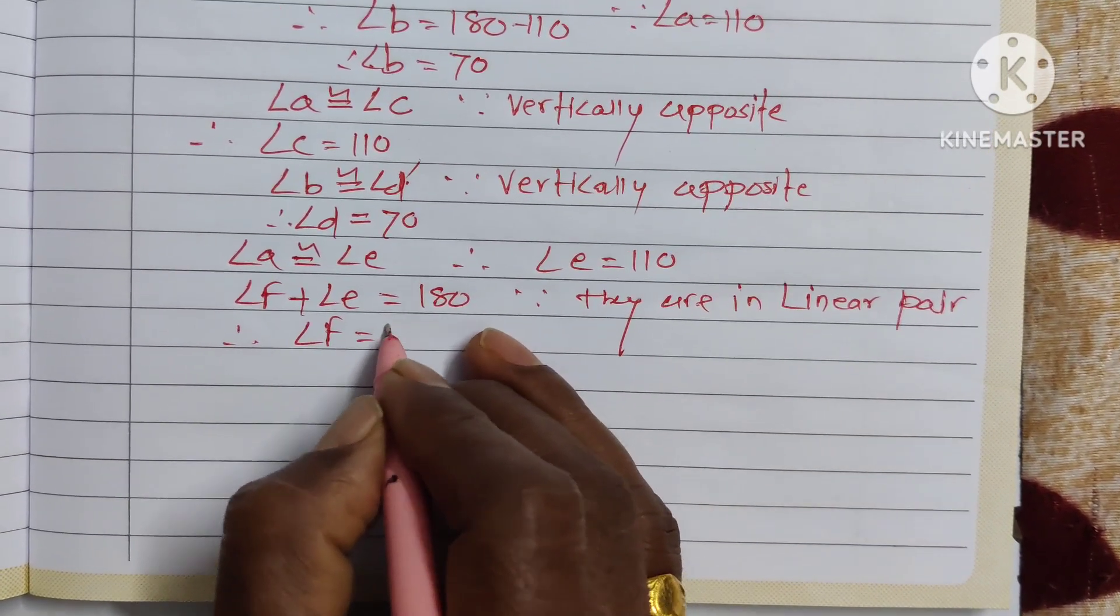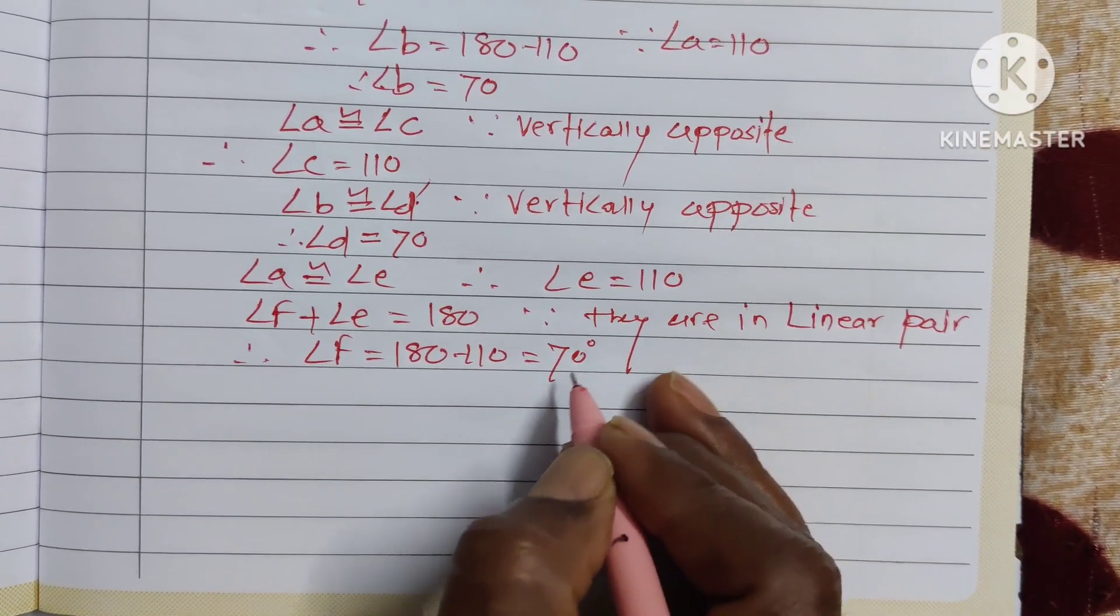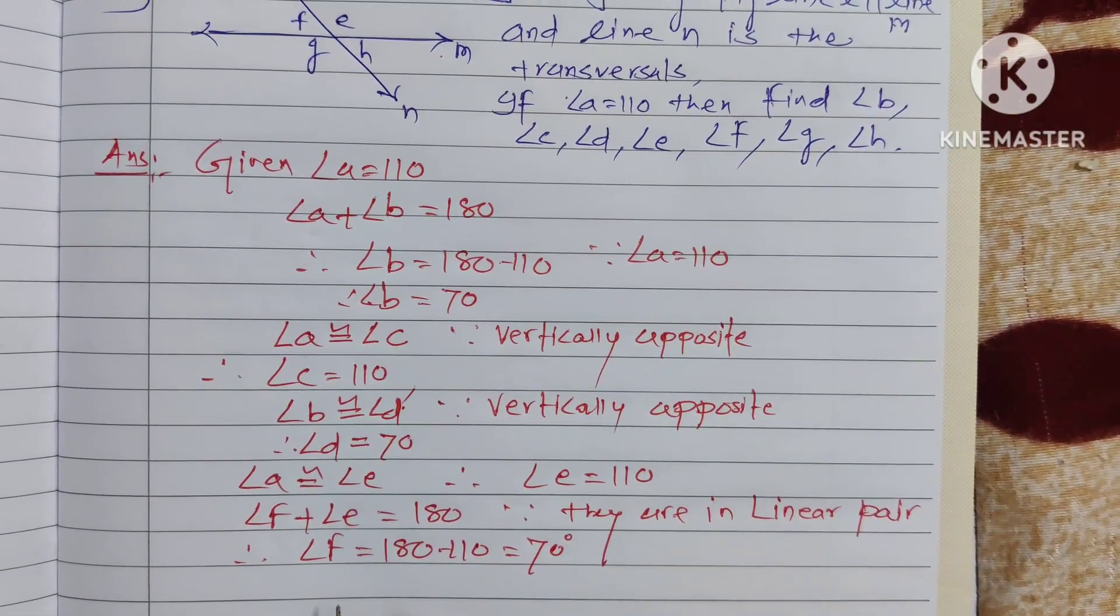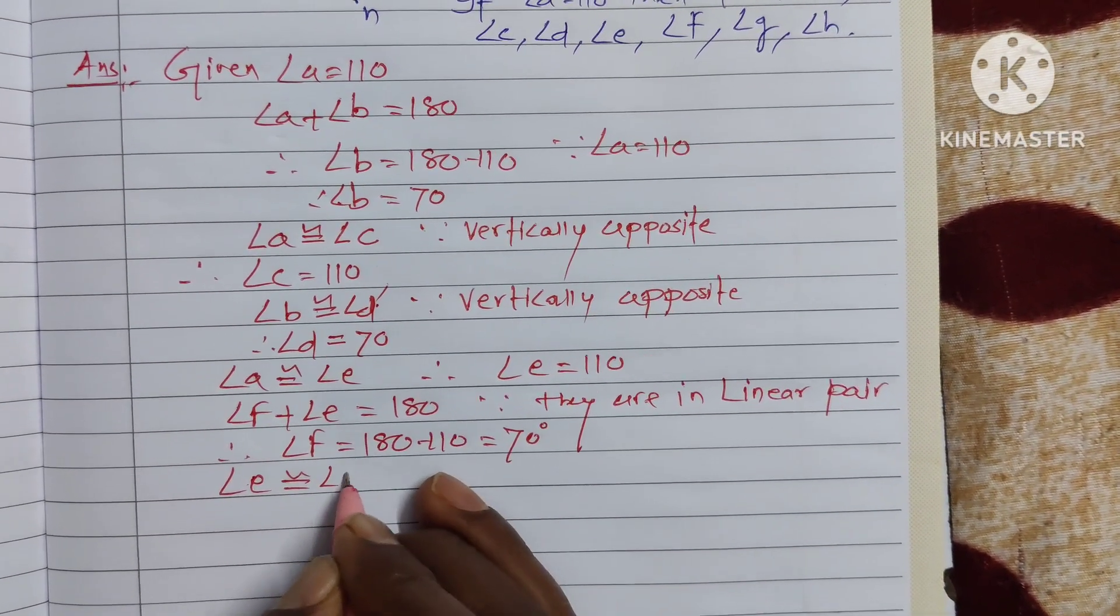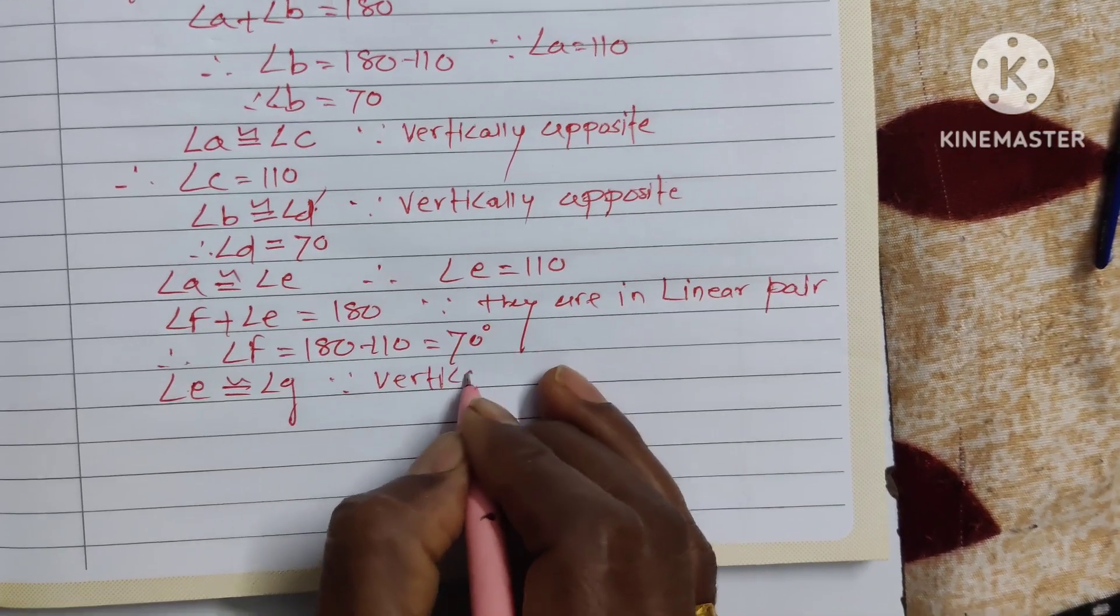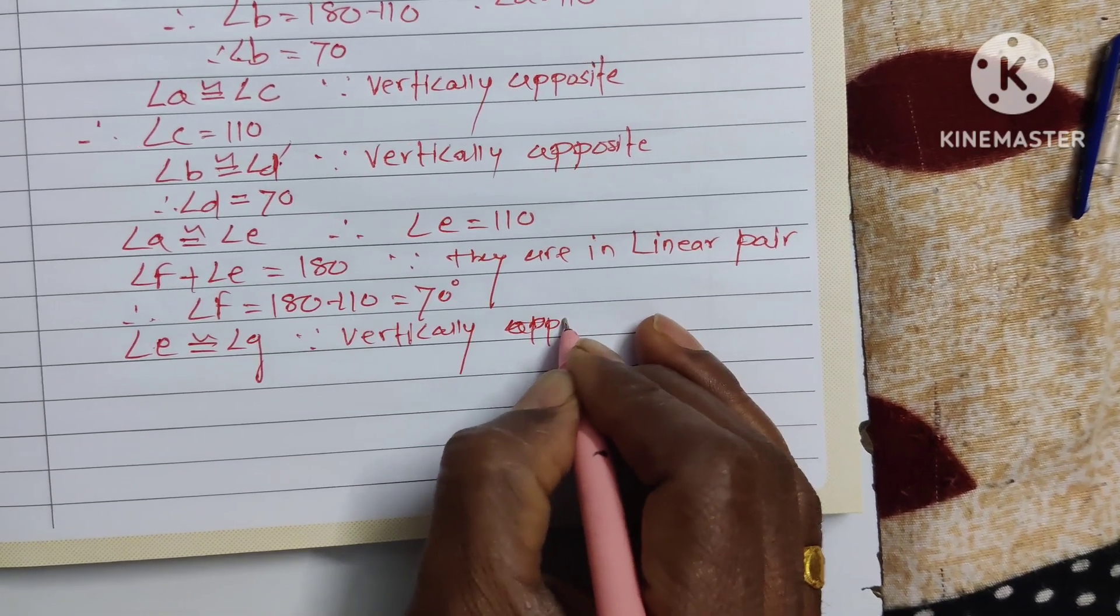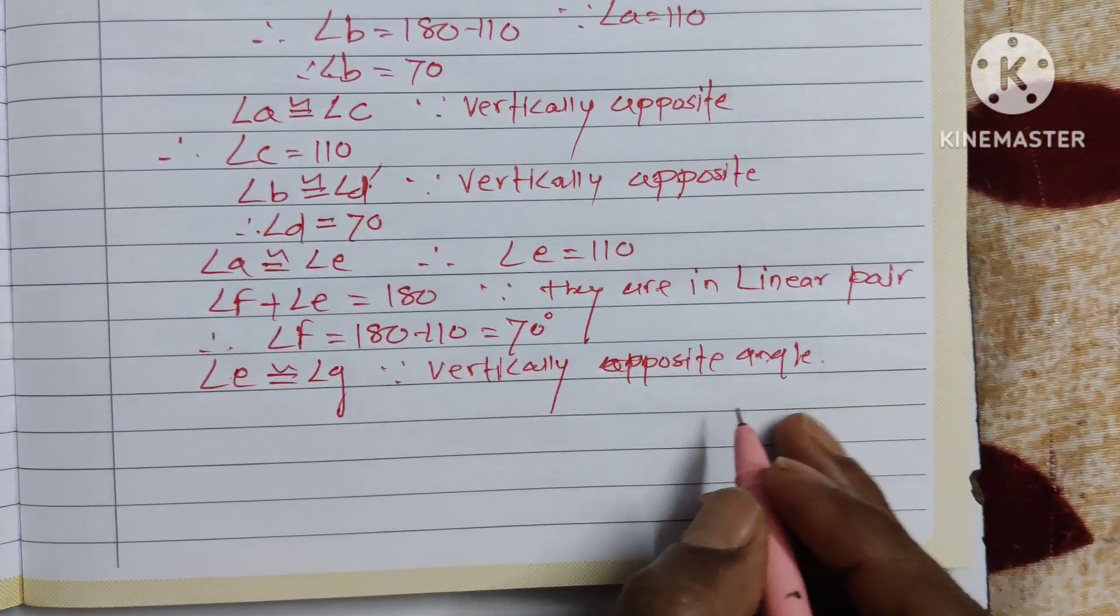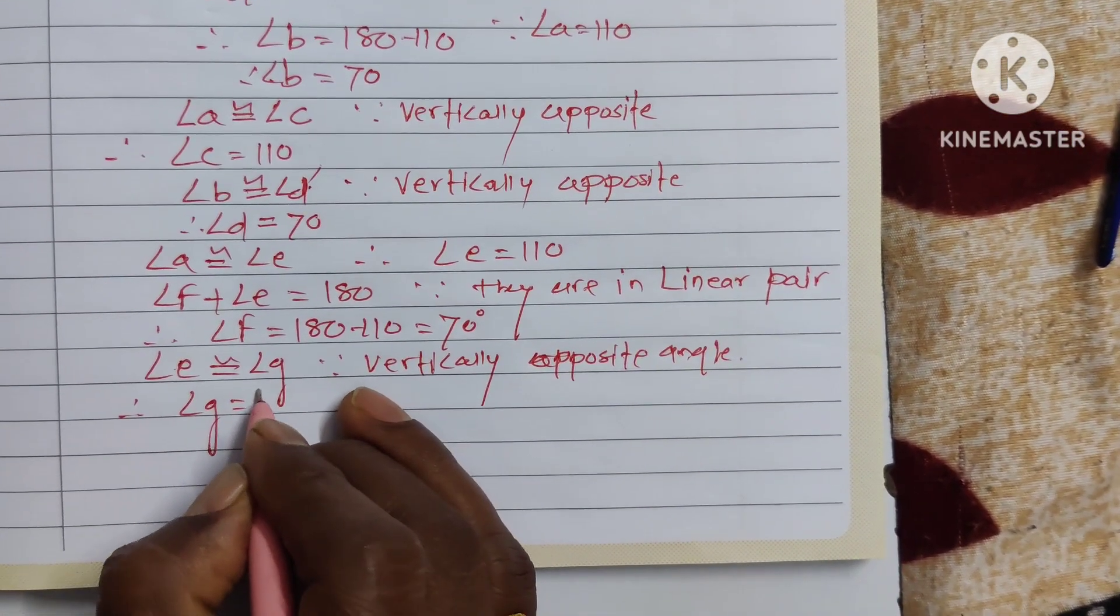Therefore angle f is 180 minus 110 equal to 70. Now angle g: angle e congruent angle g since vertically opposite angles.